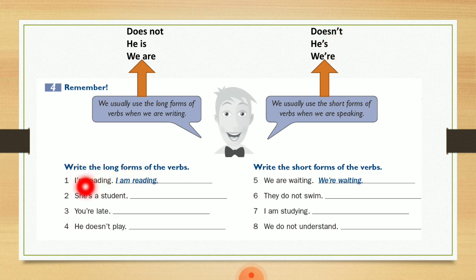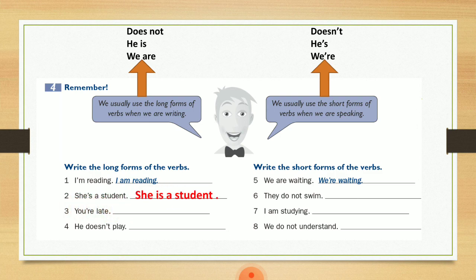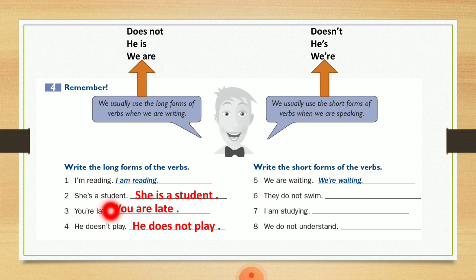Write the long forms of the verbs. Number one: I'm reading — حولناها بالـ long form صارت I am reading. Number two: she's a student — she is a student. Number three: you're late — you are late. Number four: he doesn't play — he does not play. إنتبهي إنه عندي he doesn't — الحرف المحدوف اللي هو الـ o، مكان الـ o حطينا apostrophe وخلينا does not بدل ما هي كلمتين صارت كلمة واحدة.